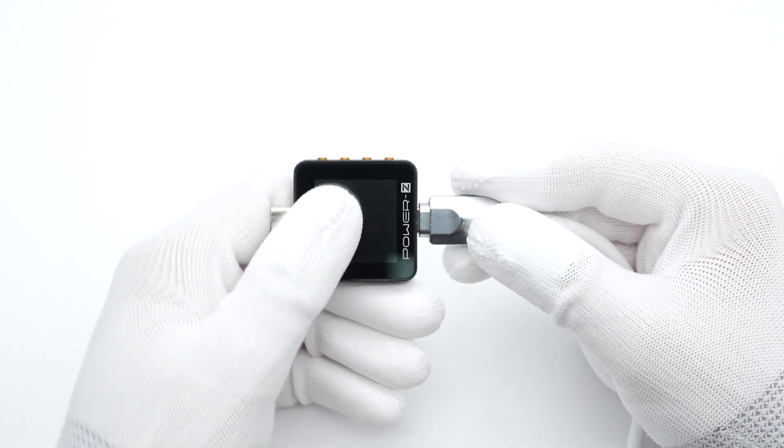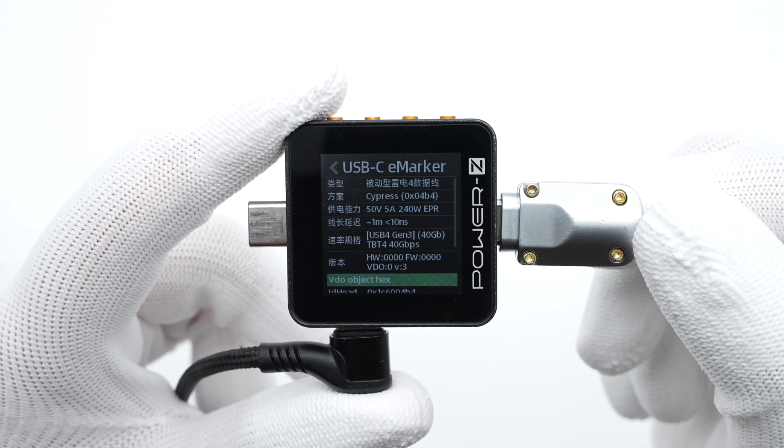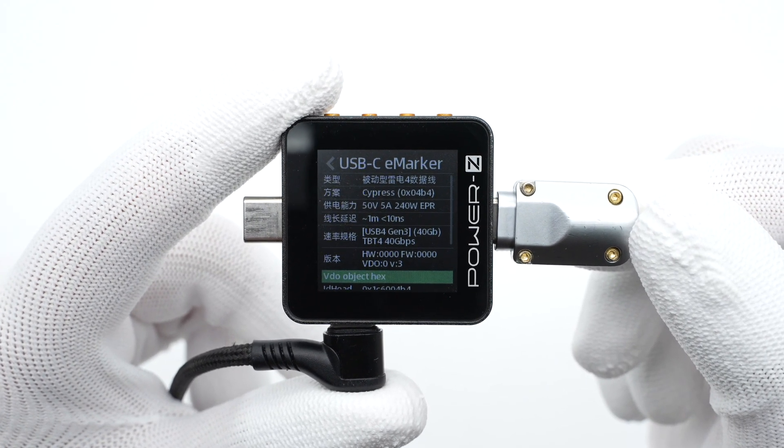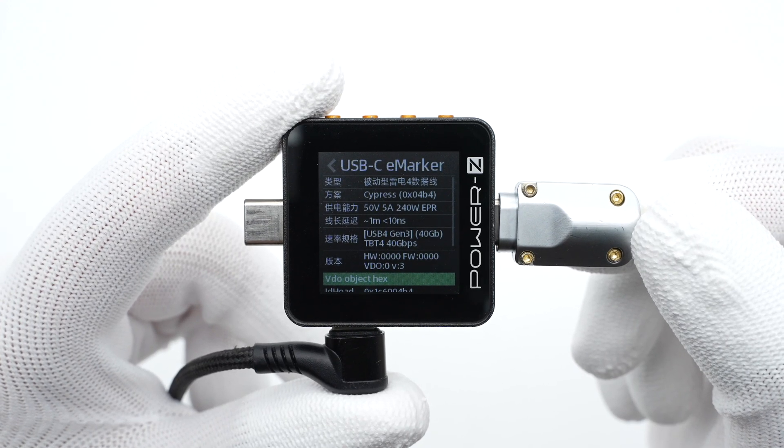The ChargerLab Power-Z KM002C shows it's a passive Thunderbolt 4 cable with an E-Marker chip. It can support 240W EPR and 40 gigabits per second.